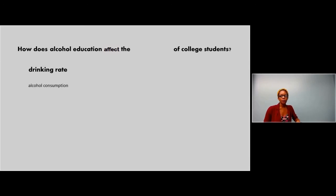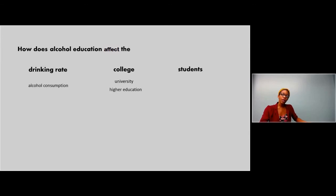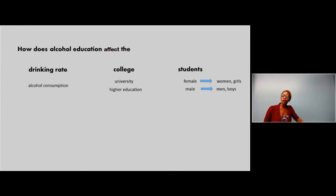Switch them out and you get different results. Take college students, for example — you can break that up as well. For college: university, higher education. For students: male, female — maybe you want to look specifically at female students or male students, or students in sororities or fraternities. And then, what's another term for female? Women, girls. Male — men, boys. So before you head to the databases, sit down and work through your topic. Come up with your topic sentence, pick it apart into independent and dependent variables to find your keywords, and then come up with more keywords by breaking them apart further.